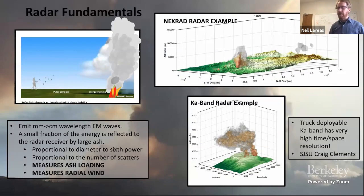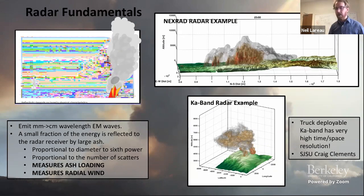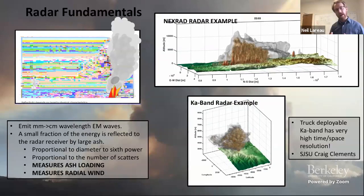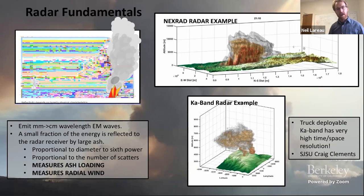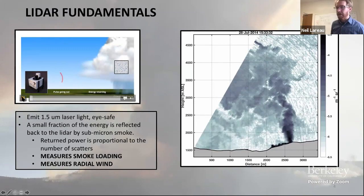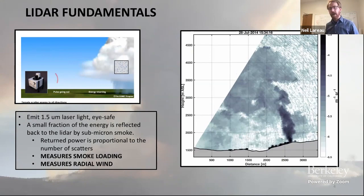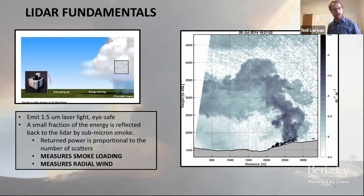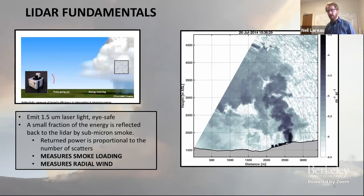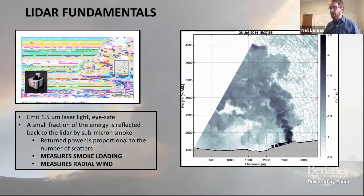The energy that comes back to the radar is proportional to the sixth power of the size of the targets, as well as their number concentration. Red colors in the radar data indicate very heavy ash loading and can trace out convective updrafts. The second tool is lidar, which operates like radar but uses 1.5 micron near-infrared laser light. Its primary sensitivity is to submicron smoke particles — the PM 2.5 we hear about. It also bounces off ash, giving us an ability to measure what's going on in the plume in a similar way to radar.